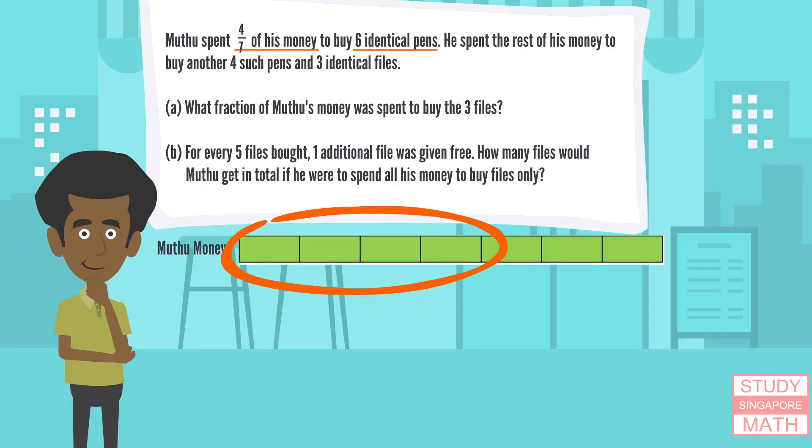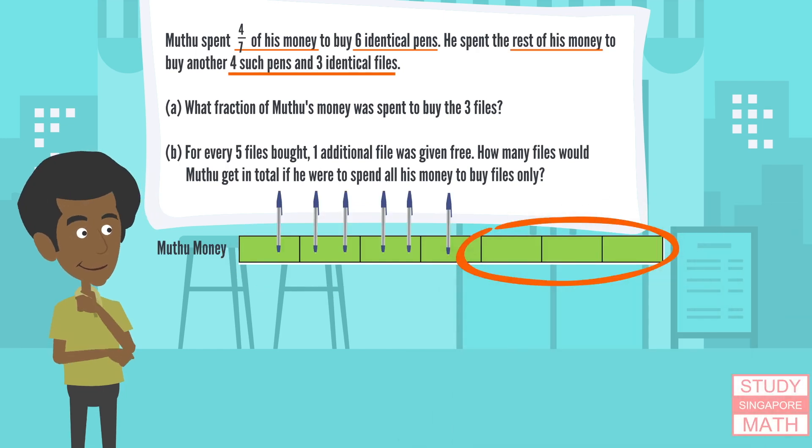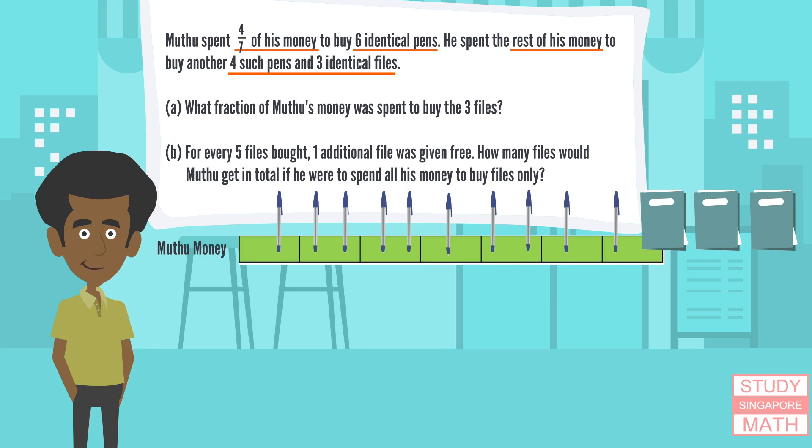Muthu spent four-sevenths of his money to buy six identical pens. He spent the rest of his money to buy another four such pens and three identical files. What fraction of Muthu's money was spent to buy the three files?